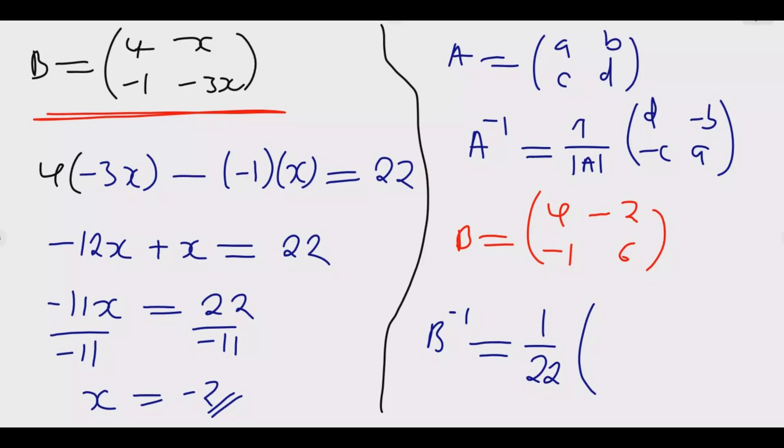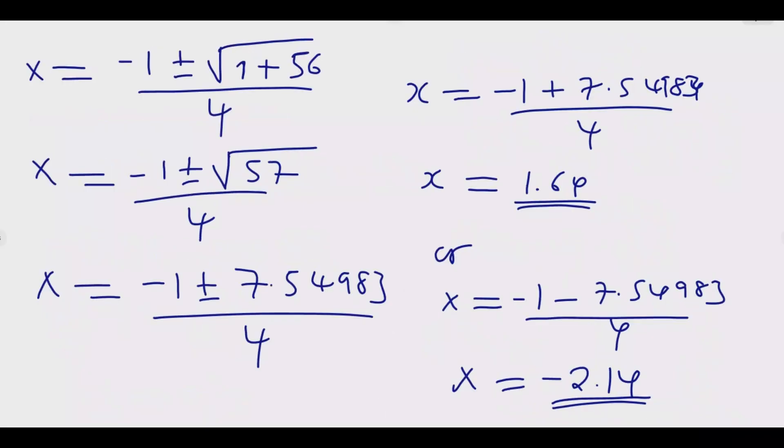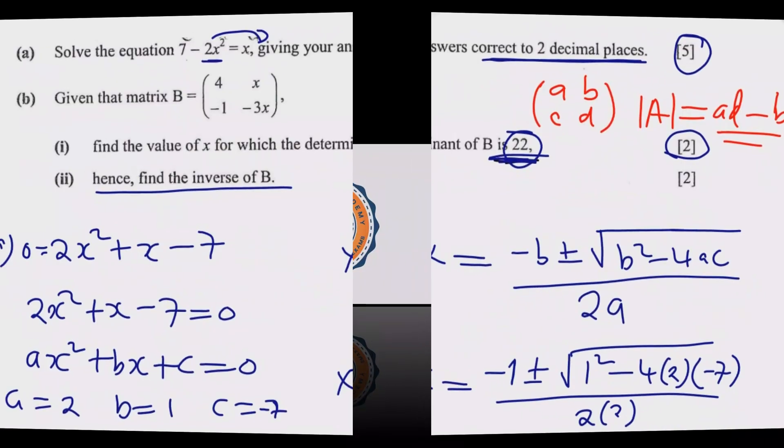Then multiply by, we swap 4 and 6, so this one becomes 6, this one becomes 4, then we negate negative 1 and negative 2, so this becomes positive 1, then this becomes positive 2. So this is the inverse of matrix B, which if you want you can simplify it further, you divide by 22 across everything. But it may make it messy. The way it is, it's much more neat and easier to follow. So this is how you answer this question to get these 9 marks.